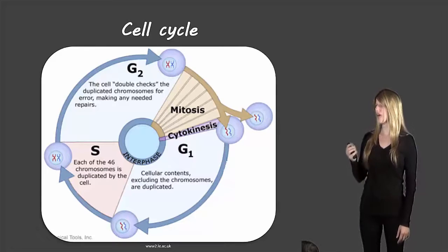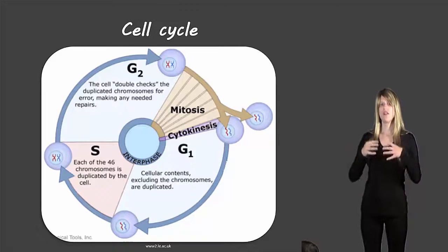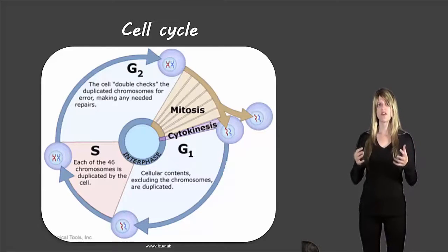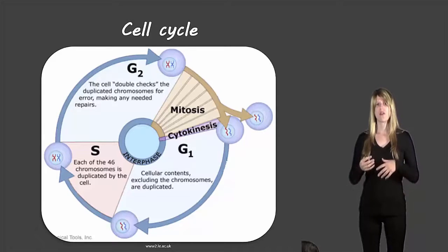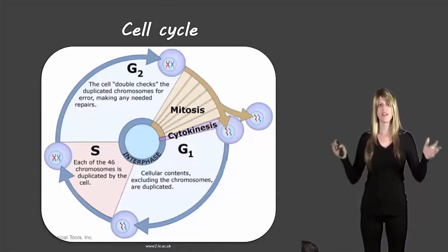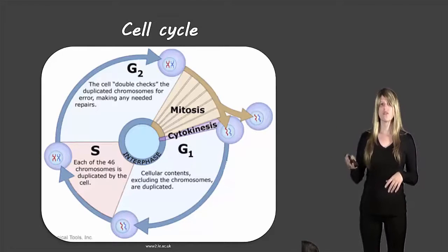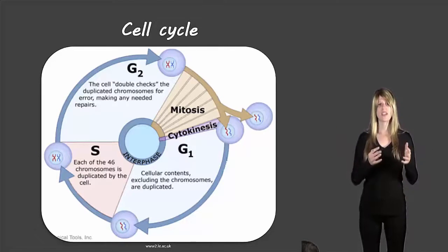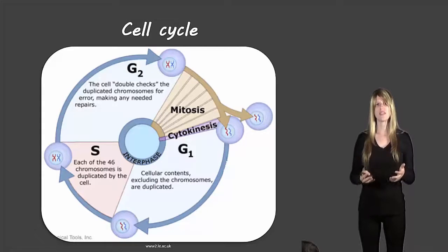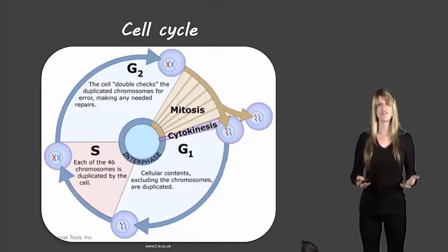In GAP1, all of the different parts of the cell — except for the chromosomes — duplicate. So the mitochondria and the endoplasmic reticulum will duplicate, because you're going to end up with two different cells and you need more of each organelle. In the S phase, all of the chromosomes double — all of the DNA becomes doubled. Then in G2 or GAP2, the cell checks that the chromosomes have been properly duplicated so there weren't any mistakes. If there are mistakes, you can end up with mutated cells, or even cancer.